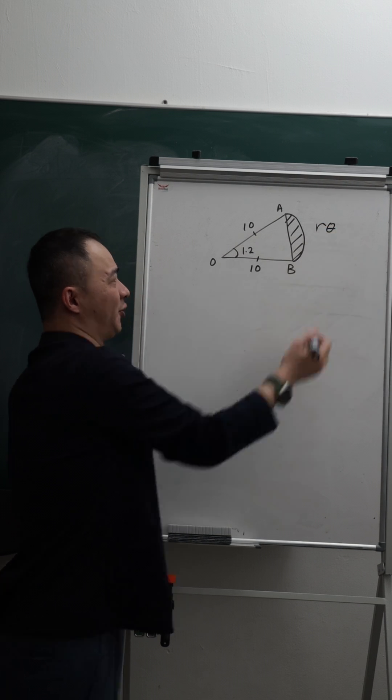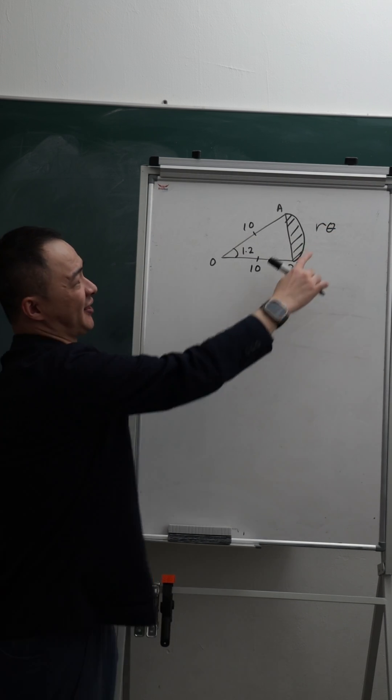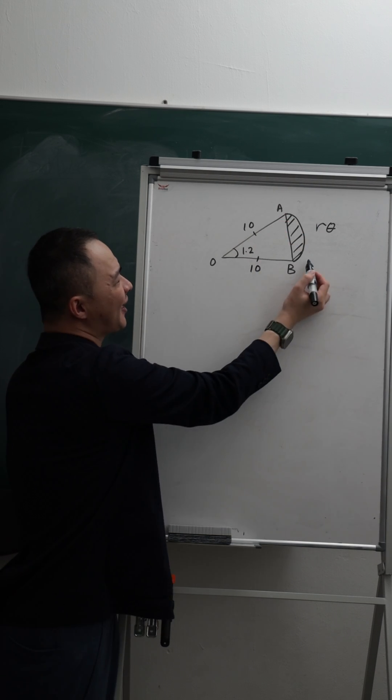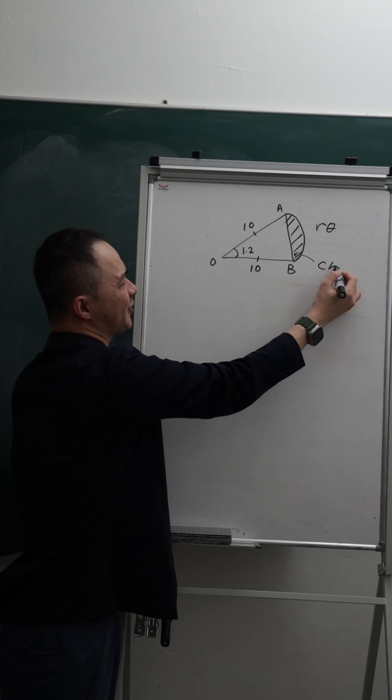R theta, or if you are studying in Malay, I believe it's Jejari Theta. But then the challenging part is to find this line. This line actually, the AB, they have a name called chord.